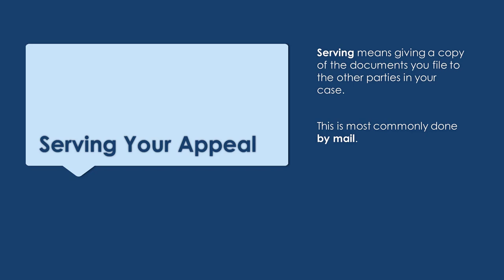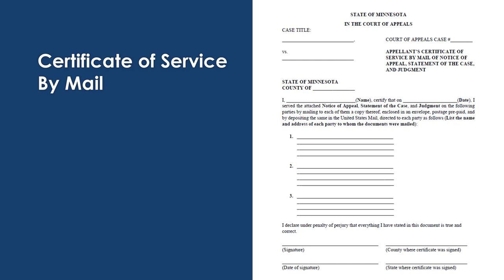Serving documents by mail means mailing them to the correct address with the correct postage. You will need to serve the other party with the Notice of Appeal, Statement of the Case, and a copy of the judgment. You will need to give the Court of Appeals proof you did this by filing the Certificate of Service with the court. The eviction appeal packet contains several different certificates of service. For now, set aside the Appellant's Certificate of Service by Mail of Brief and Appellant's Certificate of Service by Personal Delivery of Brief — you will not need these forms until you file your brief later on.